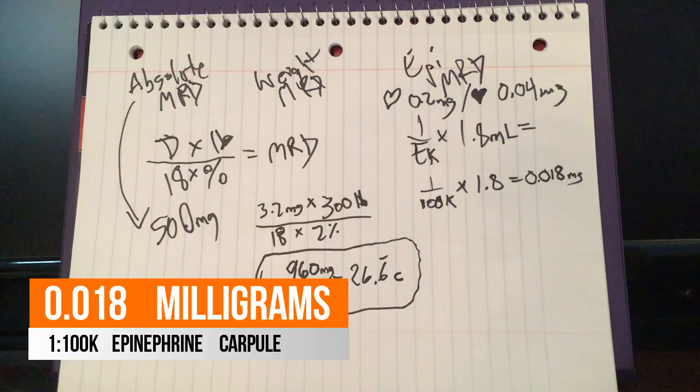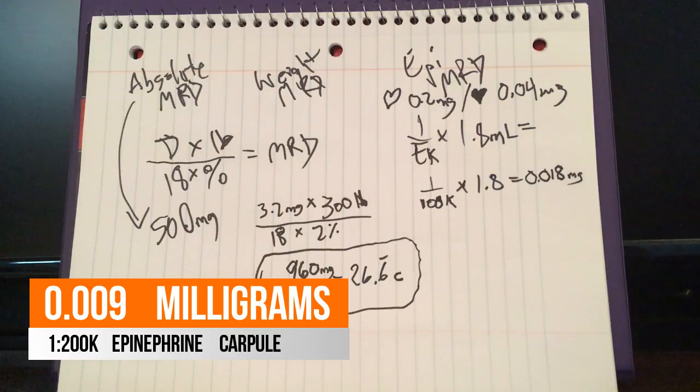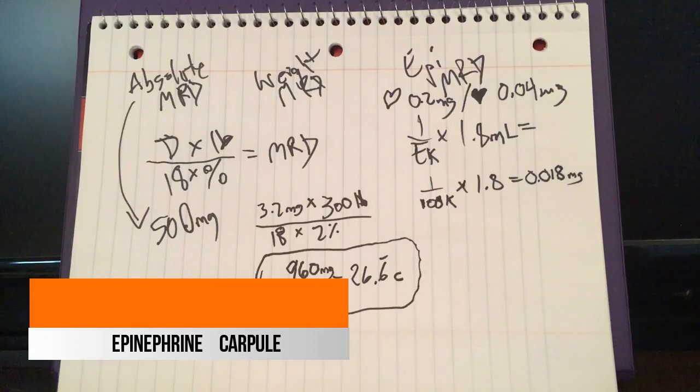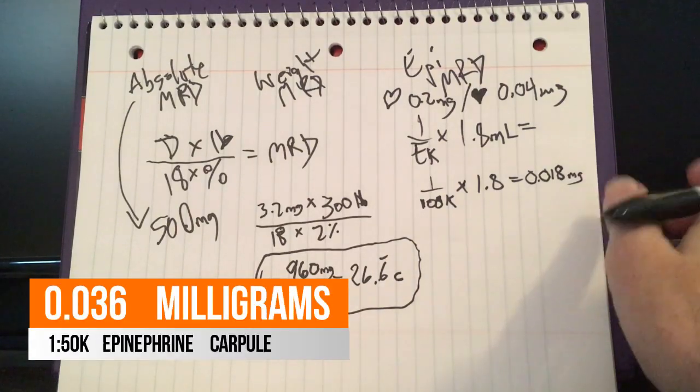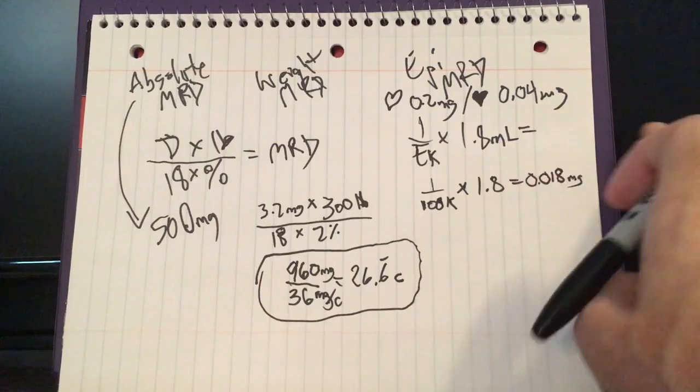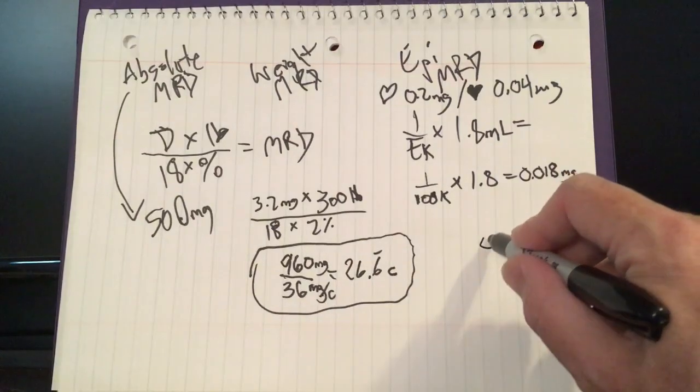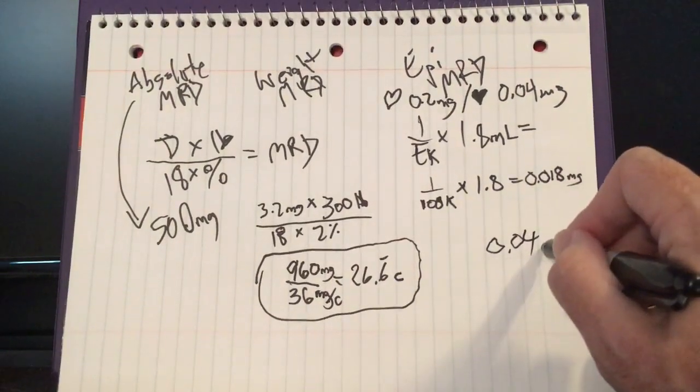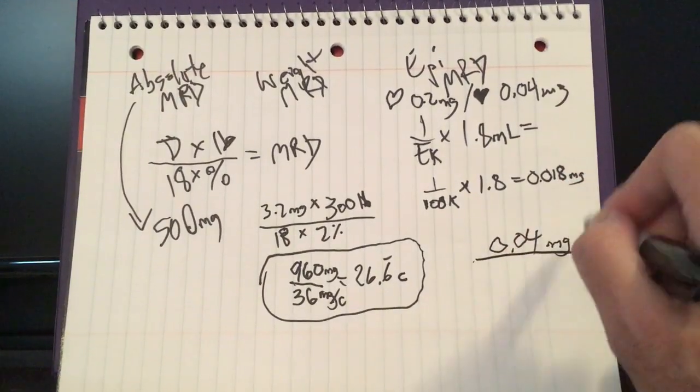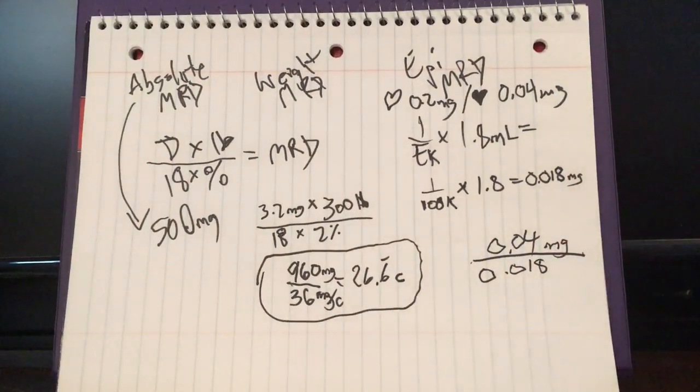So that's that other formula I made you memorize, the epi formula. You know, if you're using 1 to 200k, it's going to be half that. 1 to 50, etc. So where do we go from here? So we have a heart disease patient, they cannot exceed 0.04 milligrams. We just figured out there's 0.018 milligrams of epi in our carpules. So if we take 0.04 milligrams, which is our absolute epi, and divide by 0.018, let's see what we get. 2.22 carpules.